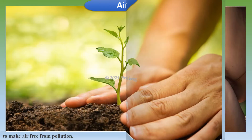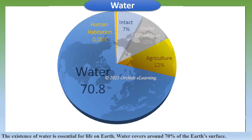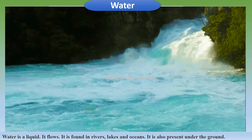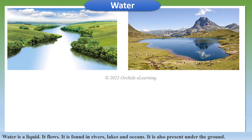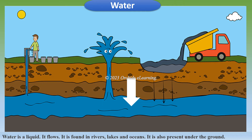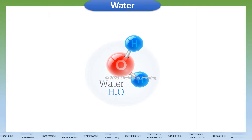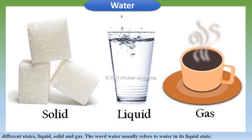The existence of water is essential for life on Earth. Water covers around 70% of the Earth's surface. Water is a liquid — it flows and is found in rivers, lakes, and oceans. It is also present underground. Water is made up of two elements, hydrogen and oxygen, and its chemical formula is H₂O. Water has three different states: liquid, solid, and gas.